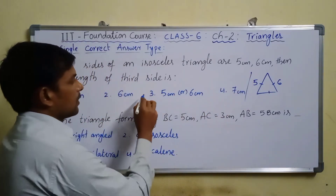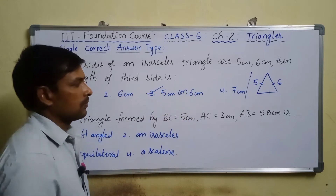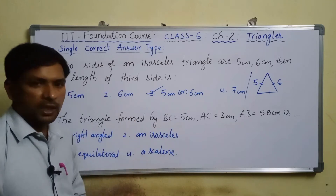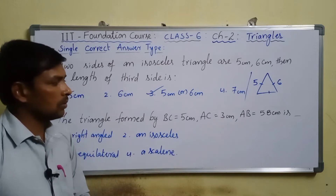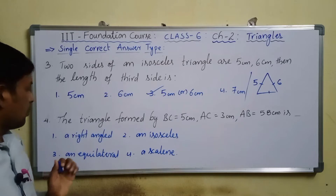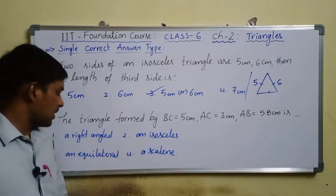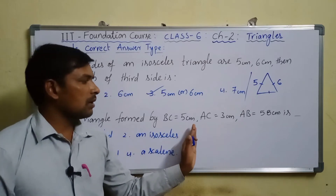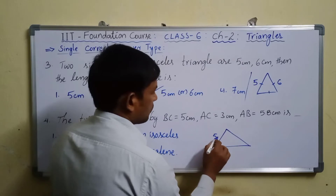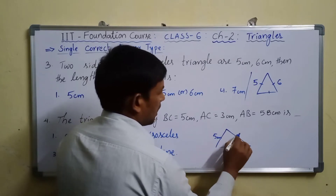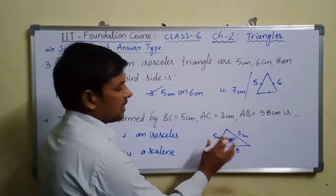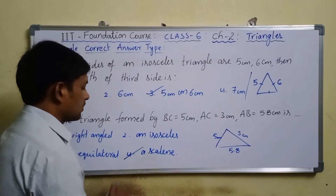Question number four: a triangle with sides 5 cm, 5.8 cm, and 3 cm — the options are right angle triangle, isosceles, equilateral, or scalene. Observing the three different sides, we call it a scalene triangle. Checking the Pythagorean theorem: 5.8 squared is approximately 33.64, while 5 squared plus 3 squared equals 34. Since these are not equal, it is not a right angle triangle — it is only a scalene triangle.